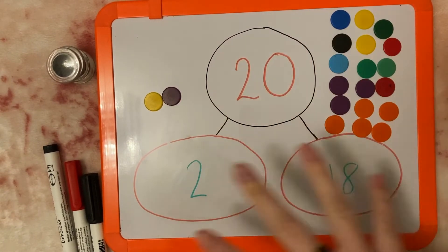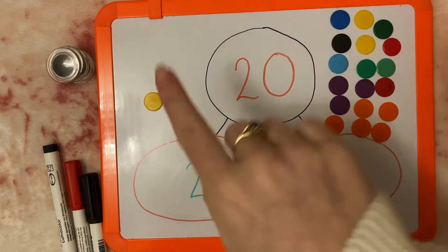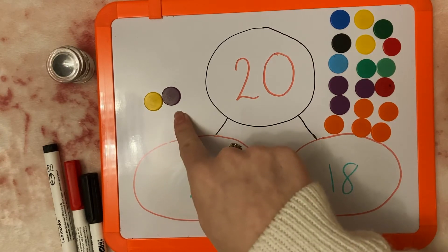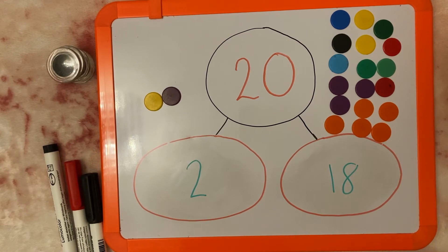We can easily work that out just by looking at it, but just to be sure if we know we've got 18 there and we counted on 2, 19, 20. That means that 2 add 18 or 2 and 18 is an example of a number bond to 20.